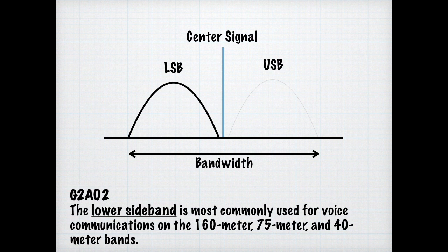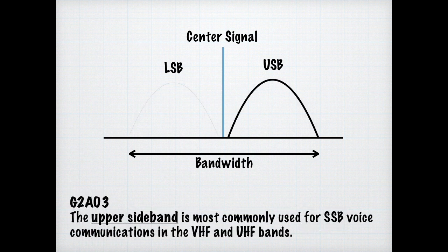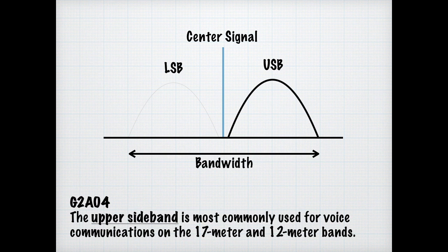Likewise, you need to know for the exam that lower sideband is the most commonly used portion for voice communications on the 160-meter, 75-meter, and 40-meter bands. As a technician, you may or may not have realized that upper sideband is most commonly used for single sideband communications on VHF and UHF. Most radios in those bands do not support single sideband — you need an all-mode transceiver. You also need to know that upper sideband is used on the 17-meter and 12-meter bands for voice communications.